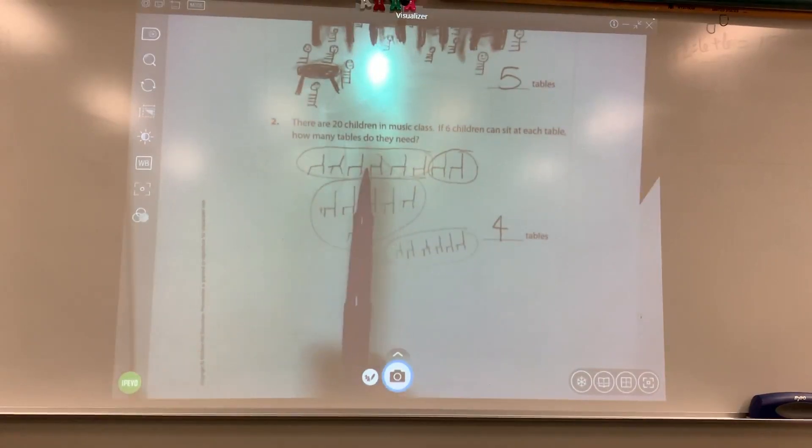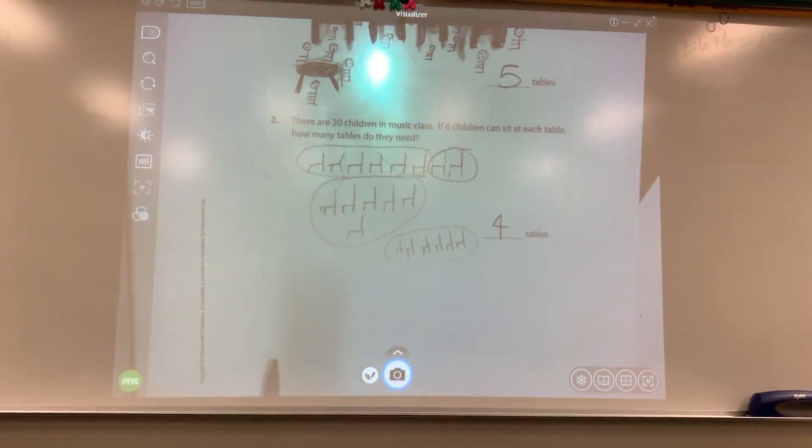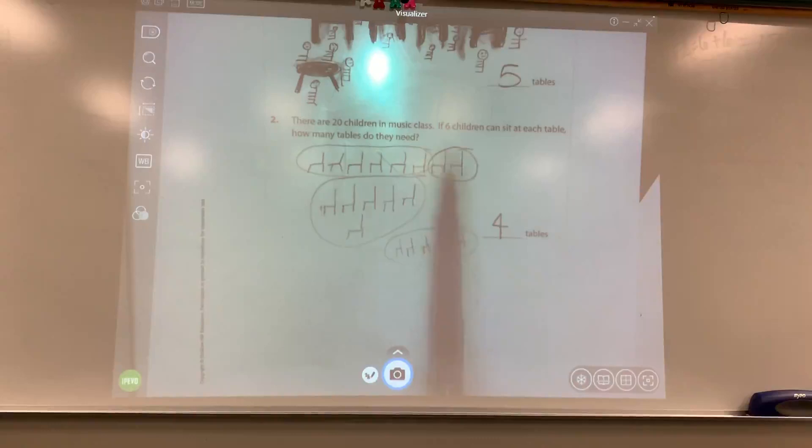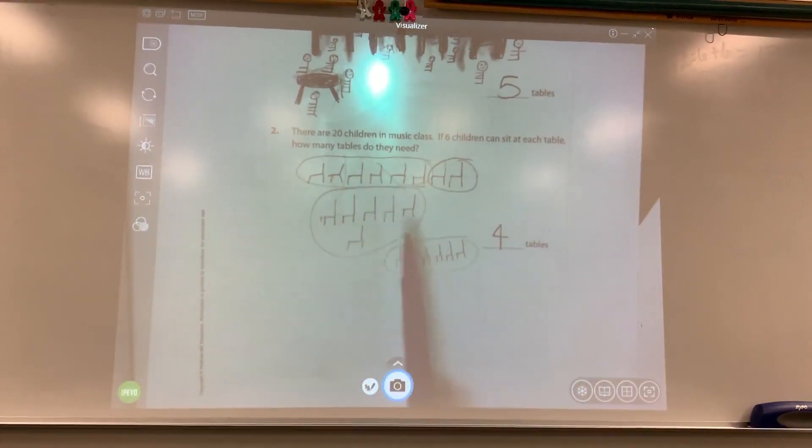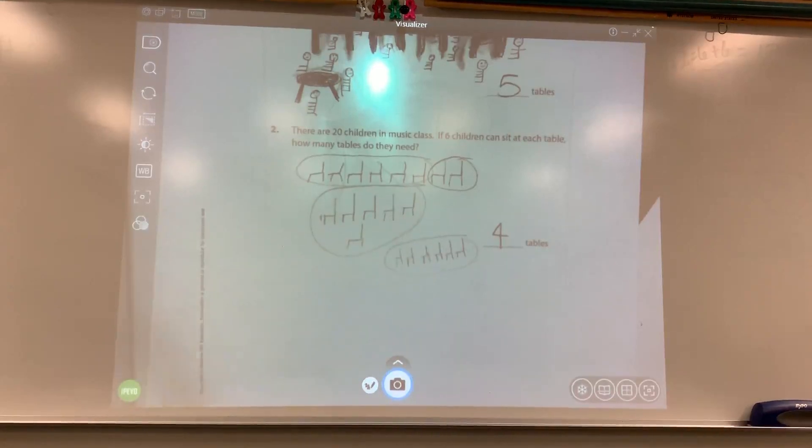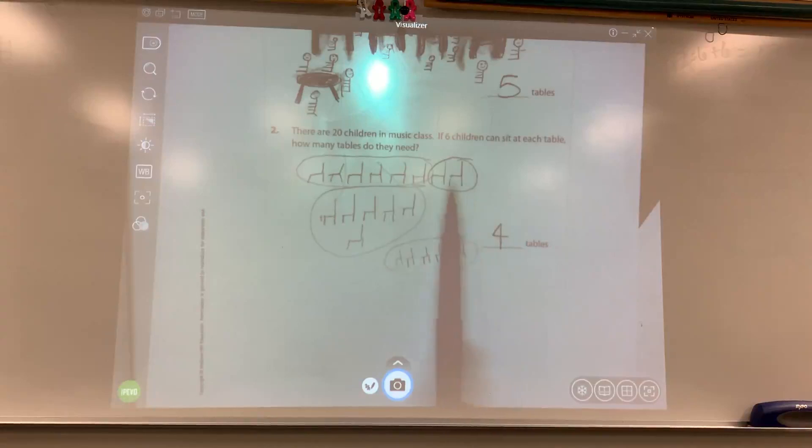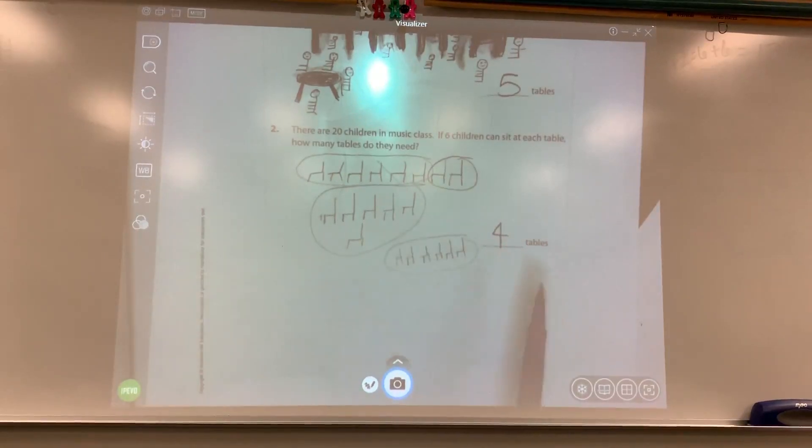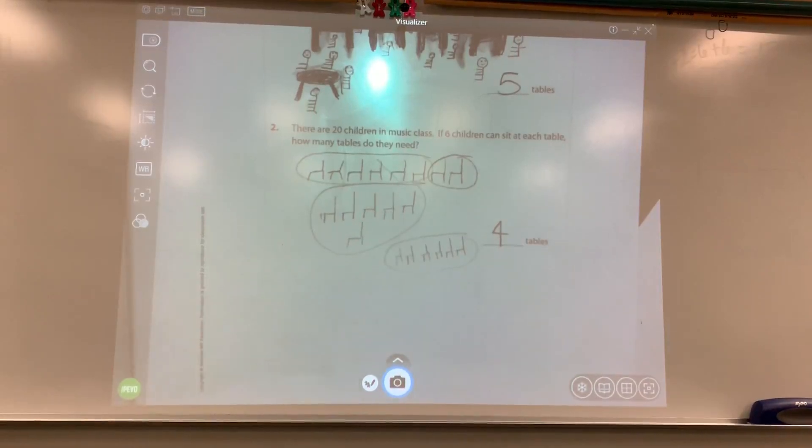This is the picture that this child made for 20 children sitting at six children at each table. So they put six chairs and circled it for a table. They put six more chairs and circled it for a table. They put six more chairs and circled it for the table. But look, we have these two. So remember, they still need a table to sit at. So they need a total of four tables in the music class.